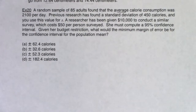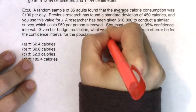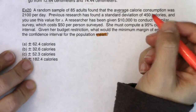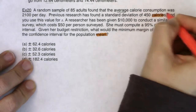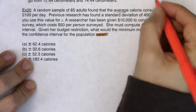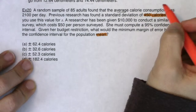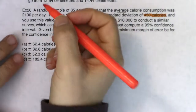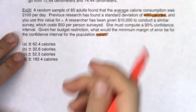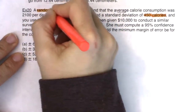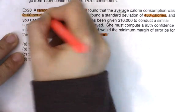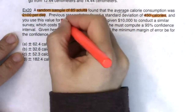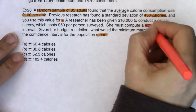There's a lot of information in there. The first thing I notice is the word 'mean' and something about calories — units — so I know I'm in mean land. The standard deviation is 450, a number larger than one, confirming mean land. I also see a random sample of 85 adults, 95% confidence, and margin of error as buzzwords.